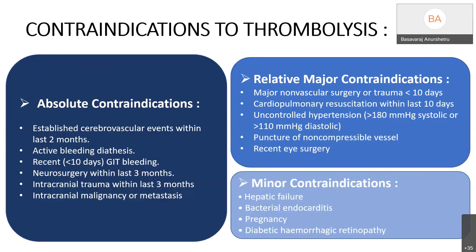Contraindications to thrombolysis: absolute contraindications include established cerebrovascular events within the last 2 months, active bleeding diathesis, recent GI bleeding within 10 days, neurosurgery within the last 3 months, intracranial trauma within the last 3 months, and intracranial malignancies or metastasis. Relative major contraindications include major non-vascular surgery or trauma within 10 days, cardiopulmonary resuscitation within 10 days, uncontrolled hypertension, puncture of a non-compressible vessel, and recent GI surgeries. Minor contraindications include hepatic failure, bacterial endocarditis, pregnancy, and diabetic hemorrhagic retinopathy.